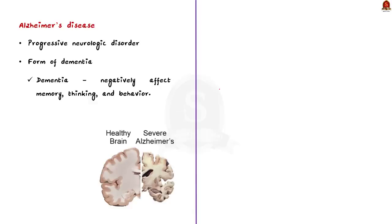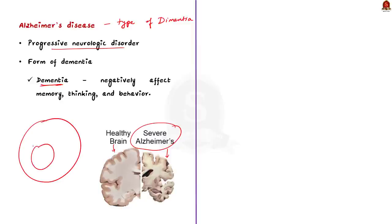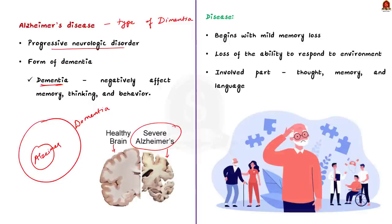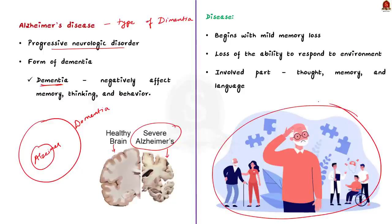Alzheimer's disease is a progressive neurologic disorder that causes the brain to shrink and brain cells to die. It is a progressive form of dementia — dementia being a broader term for conditions that negatively affect memory, thinking, and behavior; Alzheimer's is not the same as dementia but a type of it. Alzheimer's begins with mild memory loss and eventually leads to loss of ability to carry on a conversation and respond to the environment. It involves parts of the brain that control thought, memory, and language, seriously affecting a person's ability to carry out daily activities.